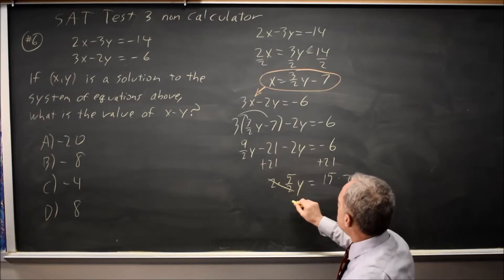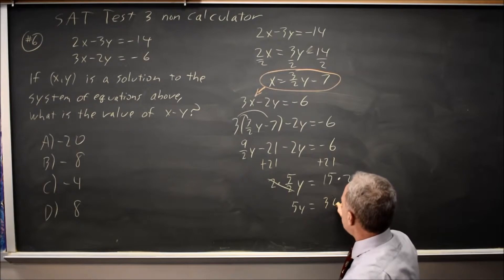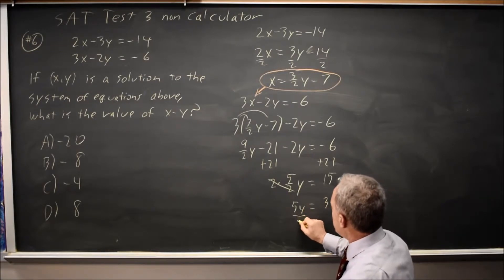Because 2 over 2 is 1. So I have 5y equals 15 times 2 is 30. Divide by 5, y equals 6.